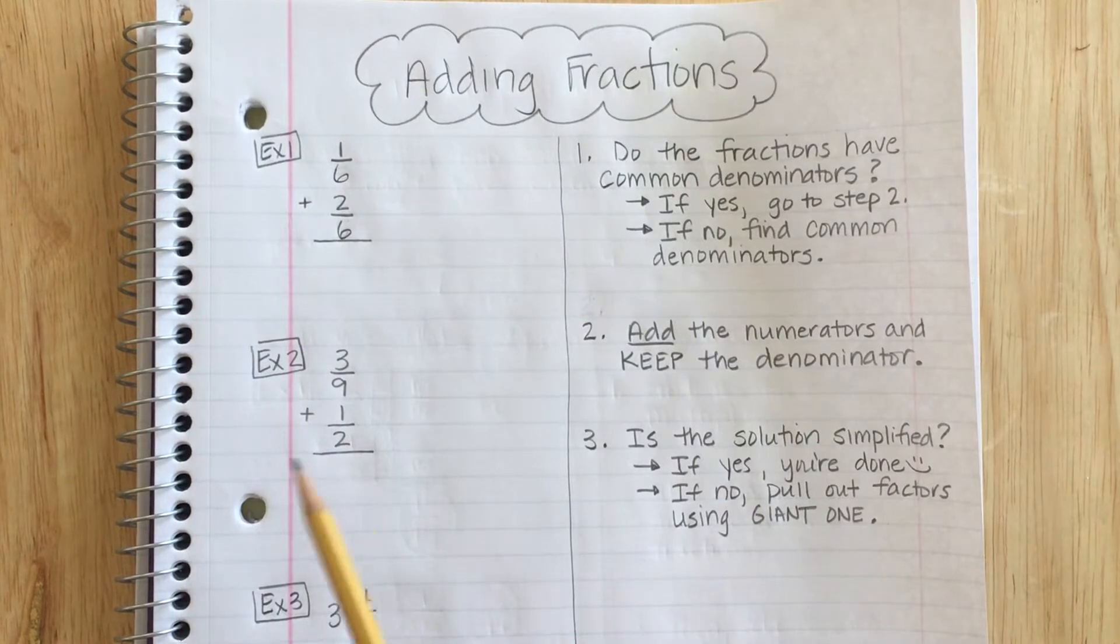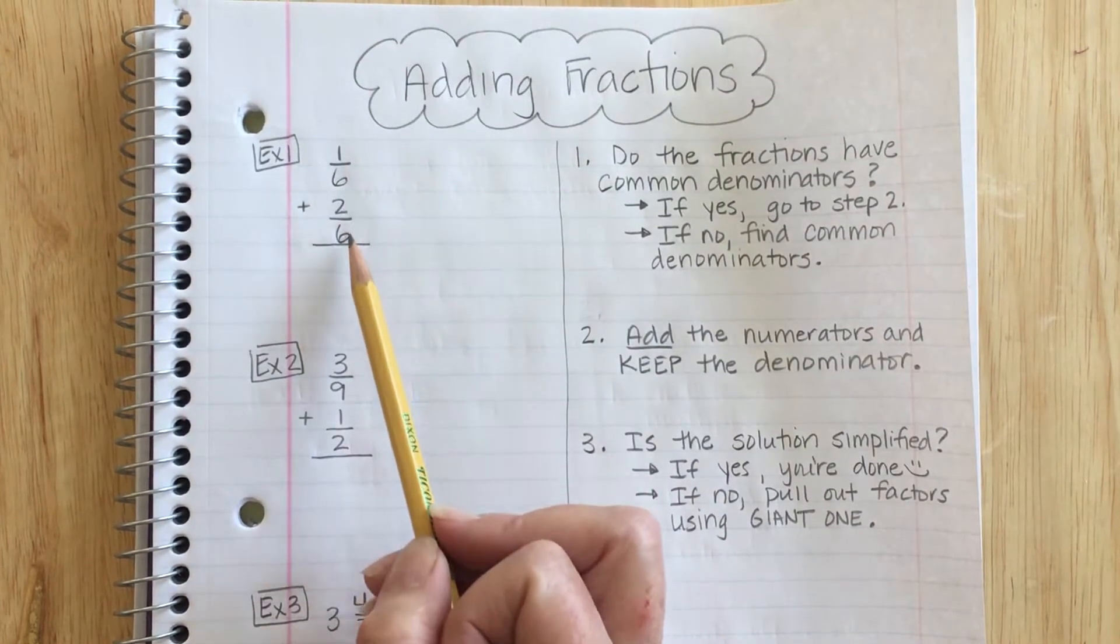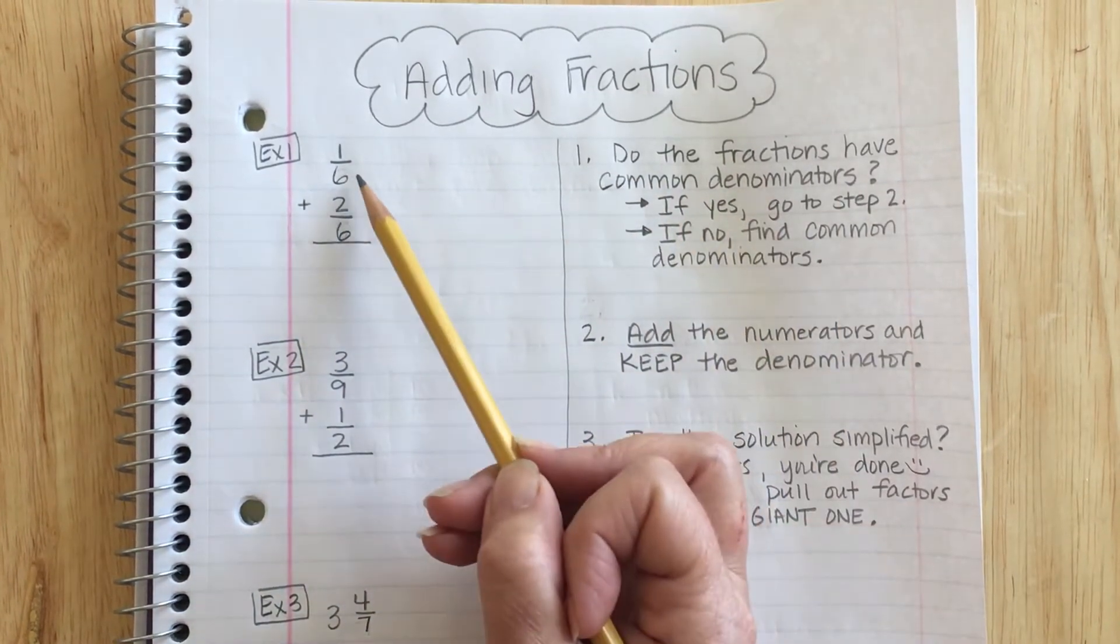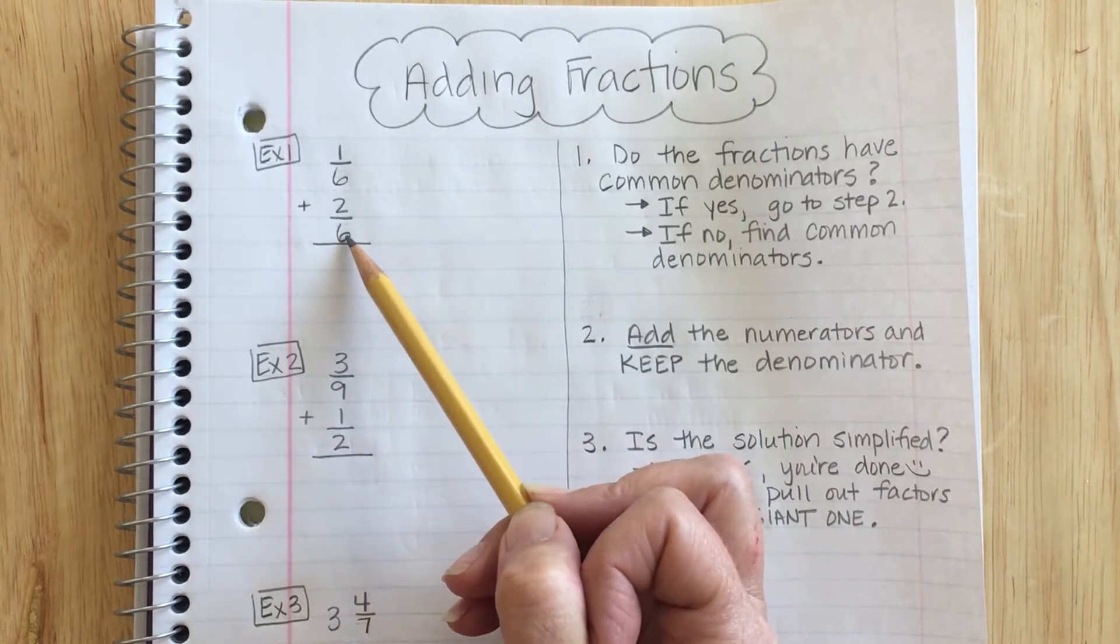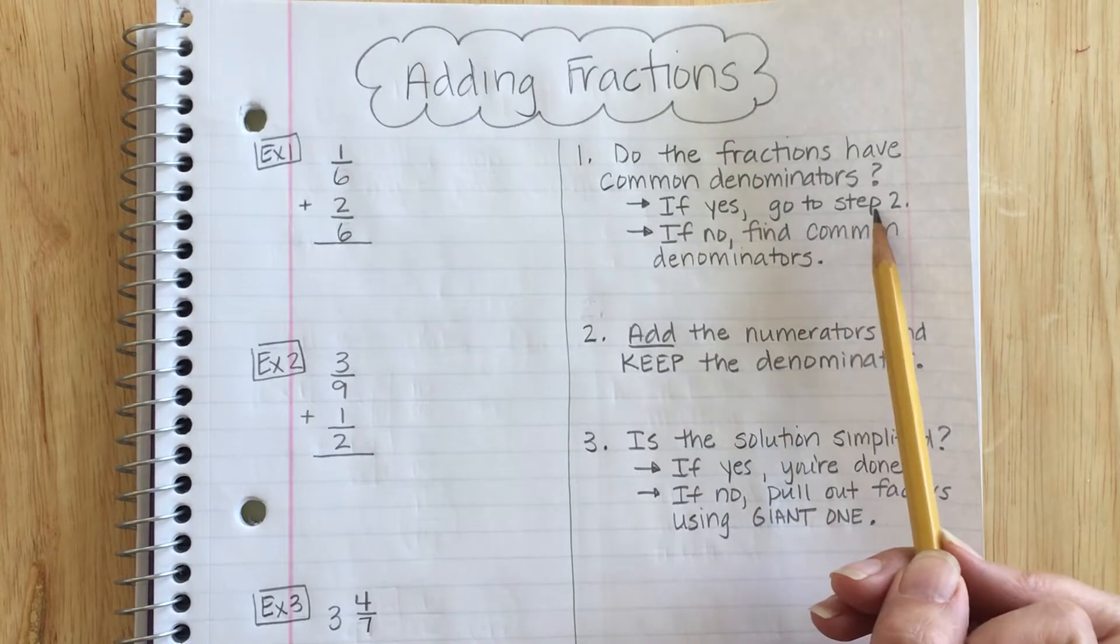Okay, let's take a look at example number one. If I notice, I have 1/6 plus 2/6. So I'm going to ask myself, do the fractions have common denominators? Well, I have a 6 and I have a 6. I have common denominators. So yes, I get to go to step two.